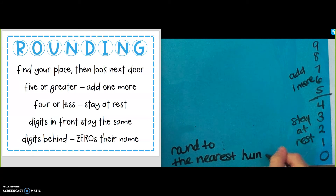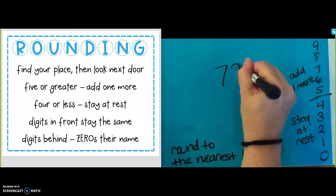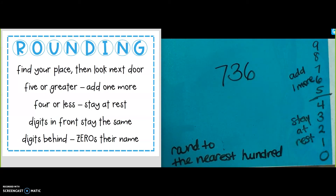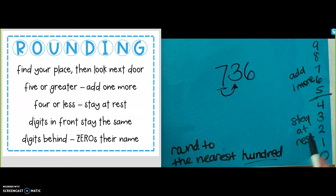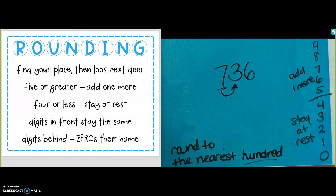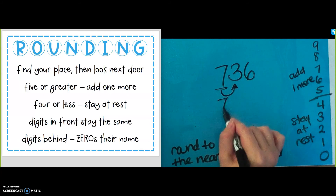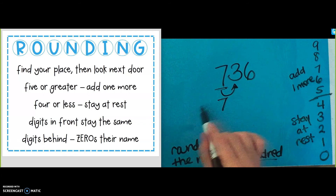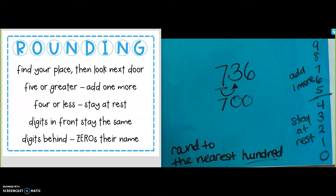Now I'm going to move on and round to the nearest 100. Same thing. I have the number 736. Find your place — my place is the hundreds place. Look next door. Next door there is a 3. 4 or less, stay at rest. It's 4 or less, so I'm going to keep this at rest. I'm going to put the 7 down here. Digits in front stay the same — I don't have any digits in front. Digits behind — 0 is their name. When I round 736 to the nearest 100, I get 700.